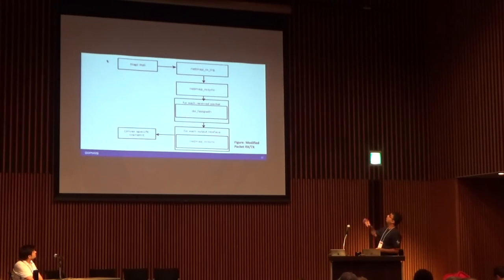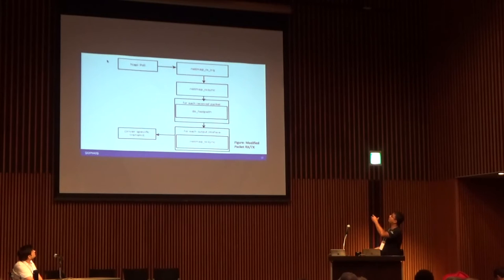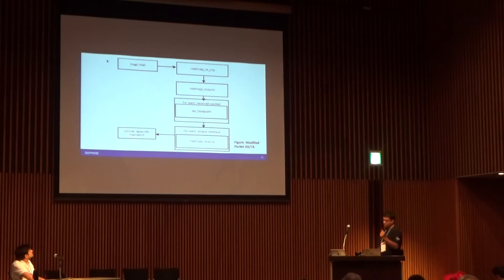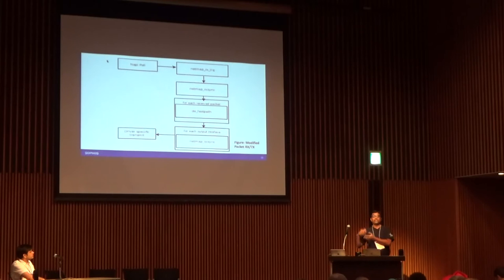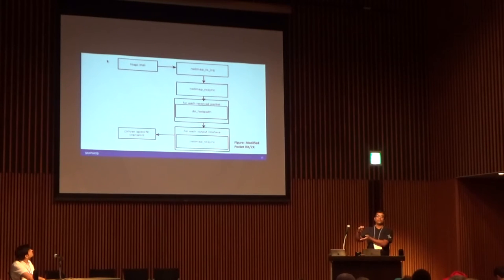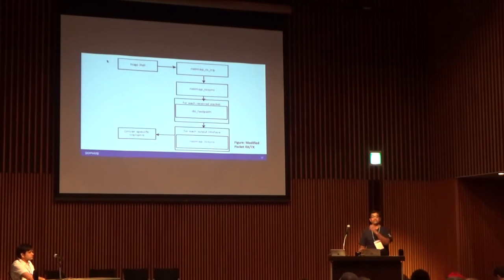Here is the high-level diagram: from the NAPI poll, that is NetMap RX IRQ and NetMap RX sync. From the RX sync we have a batch of packets, and for each packet we call the do_fast_path function. For example, in a NAPI callback with 64 packets going to two output devices — 32 each — we create device-wise batches and send those batches directly to the NICs.